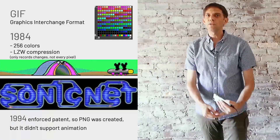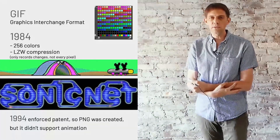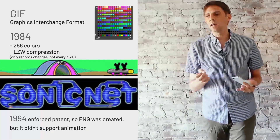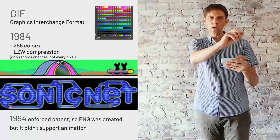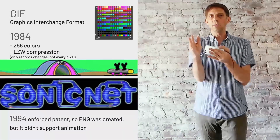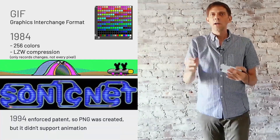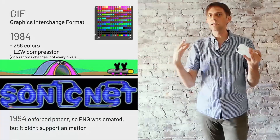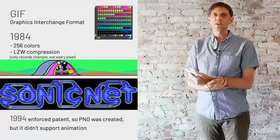The first file format for pictures was the GIF — Graphics Interchange Format. It works with 256 colors and uses LZW compression, which only records changes between pixels. So if you have a long line of white pixels where one color never changes, there's nothing to record and the file is very small. But if you have vertical stripes, it records every change and the file actually gets bigger.